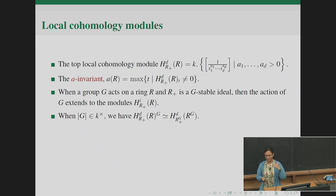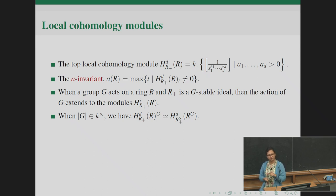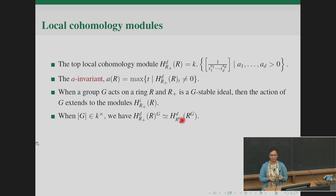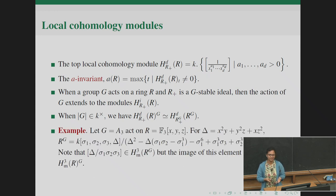Going back to the non-modular case: because of the Reynolds operator, R^G is a direct summand of R, and one can prove that the fixed points of the group action on H^d_m(R) are isomorphic to H^d_m(R^G). The obvious question is whether this holds in the modular case — and as we've seen before, things don't happen as expected.